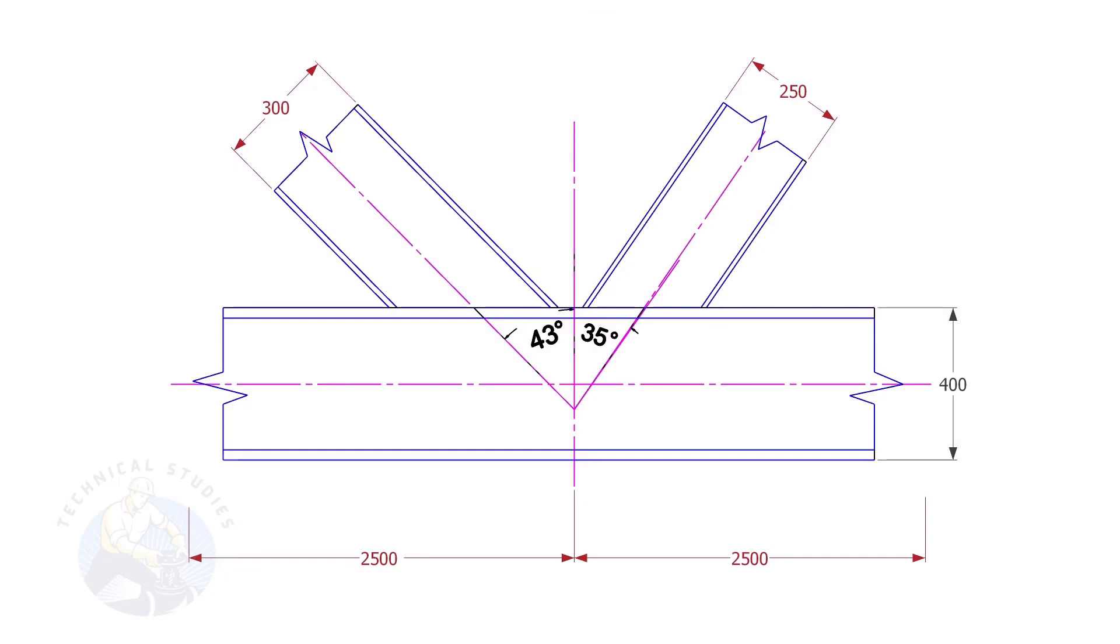To calculate the cutback of a beam or channel, we need to know two things: the size of the beam and the including angle.